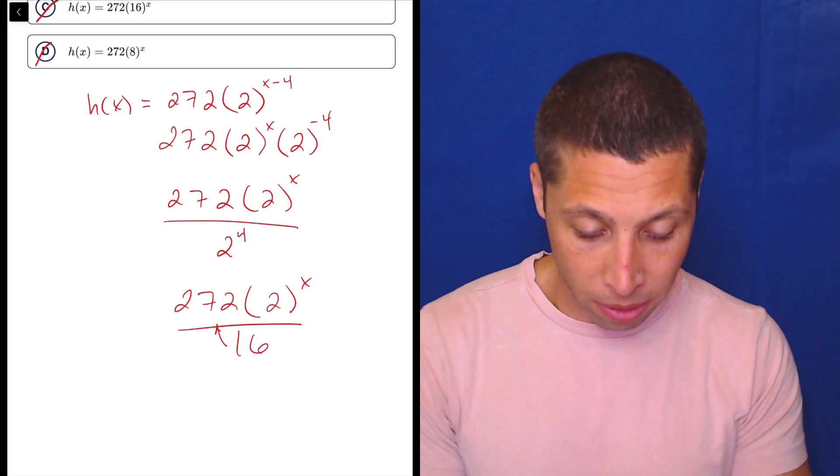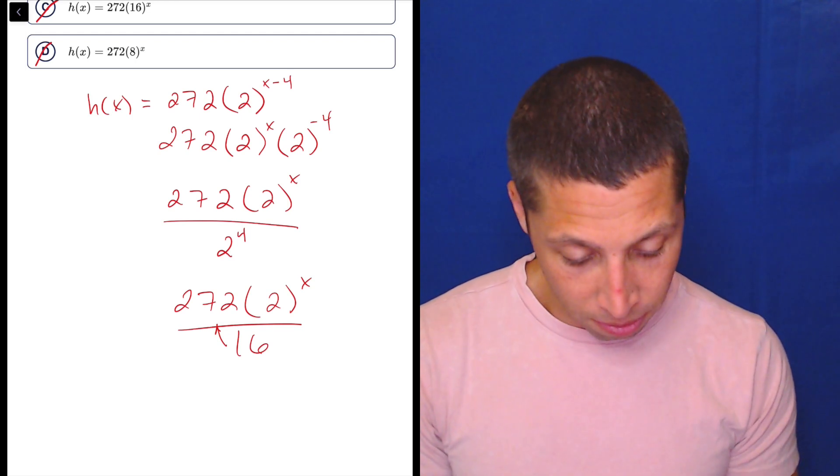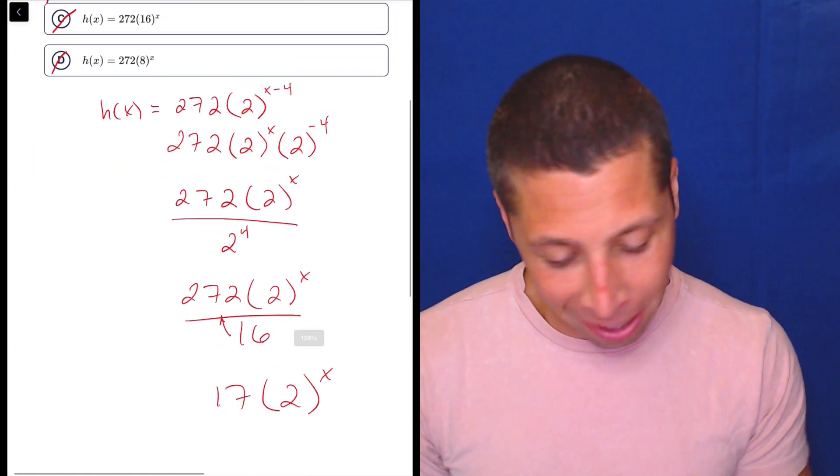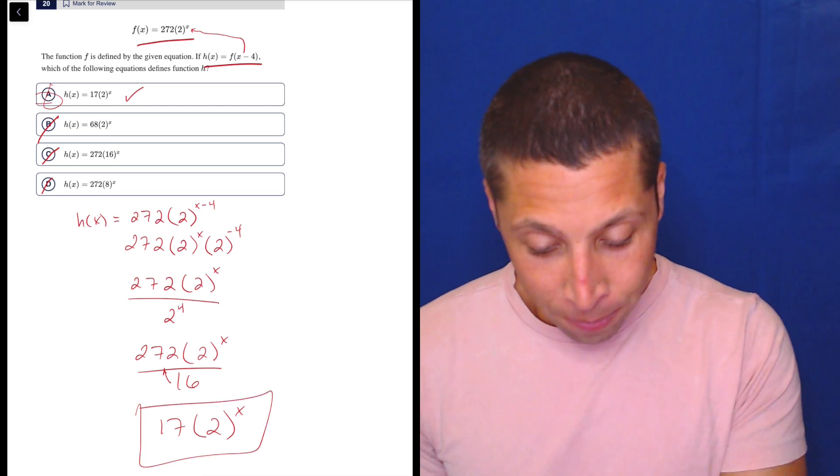I guess we know the answer because we already know what the value is. But, 272 divided by 16 is... Wait. What did I just do? Oh, 17. Oh, my gosh. 17 times 2 to the x. I almost... That 17 is such a weird number. I thought that would be wrong. But there it is. So, that's what we got.